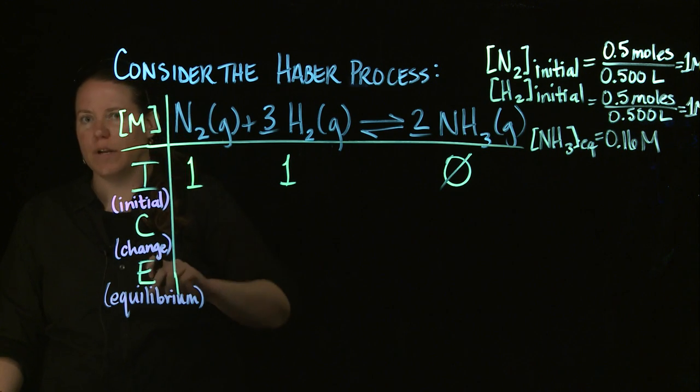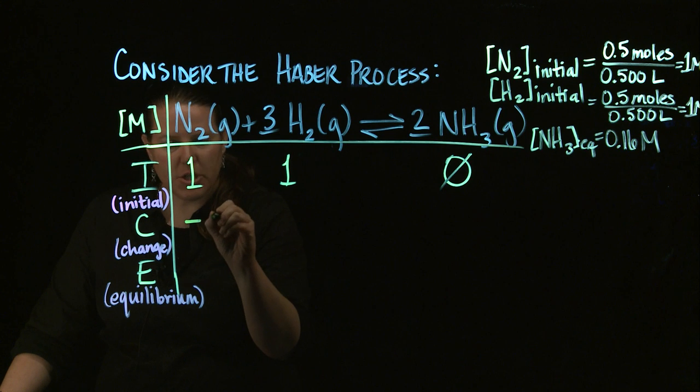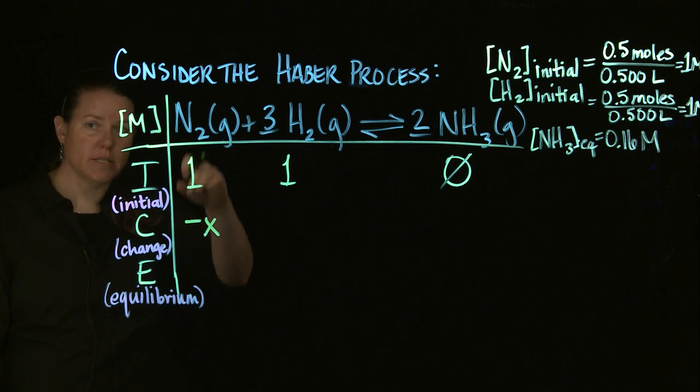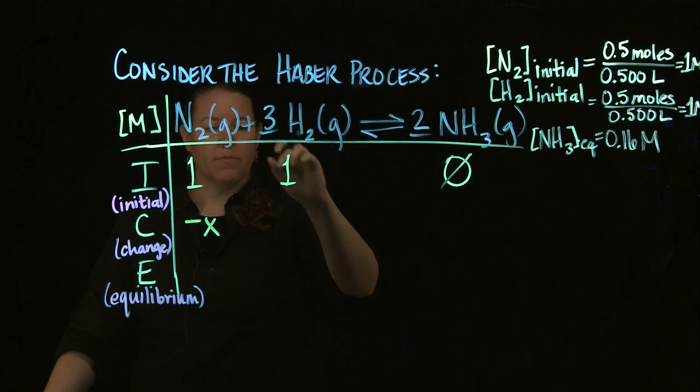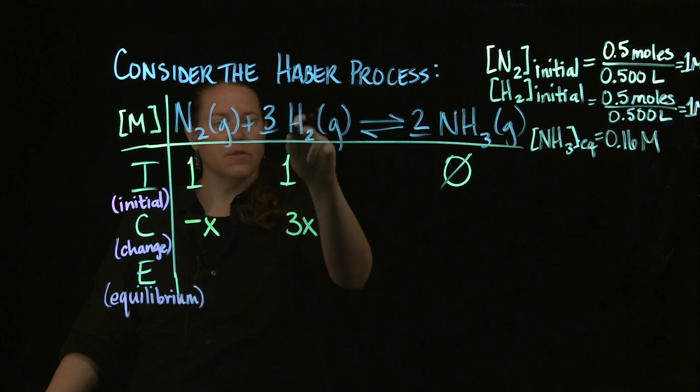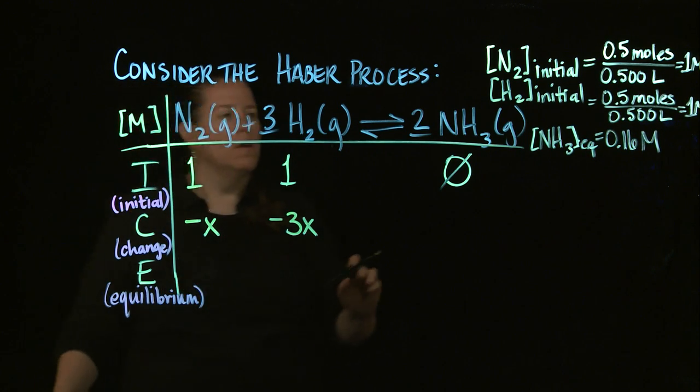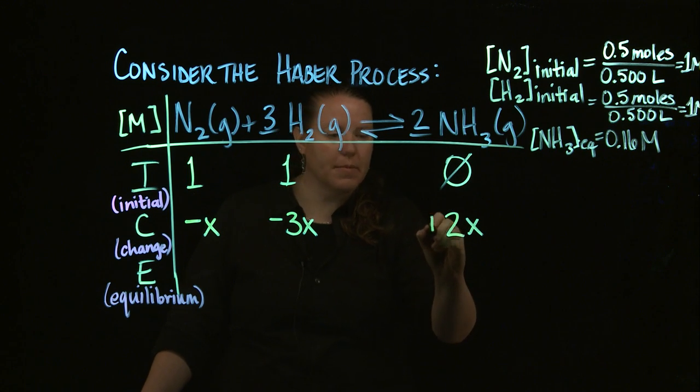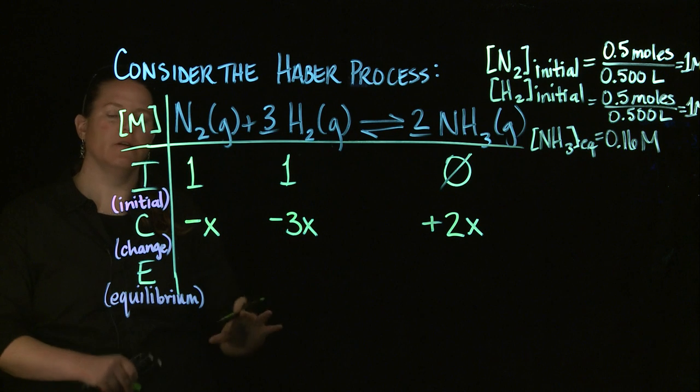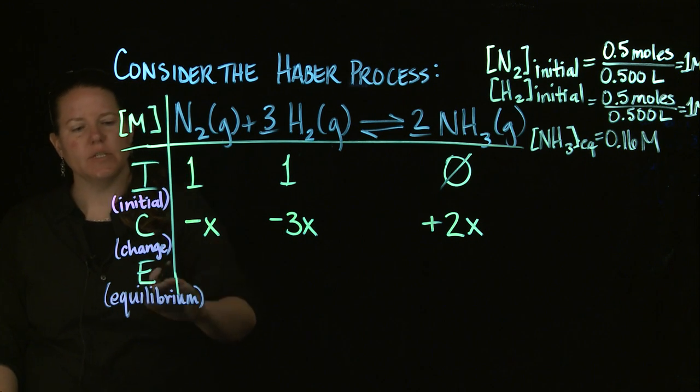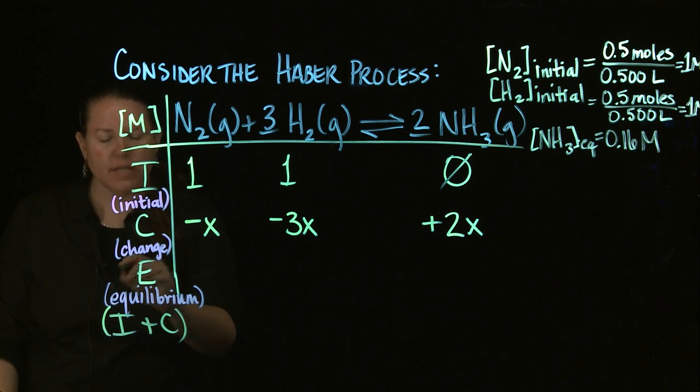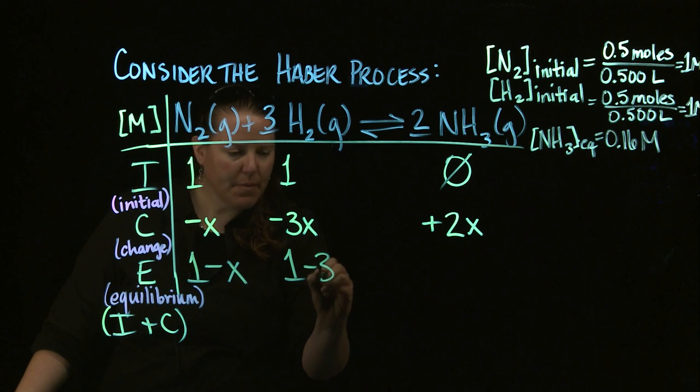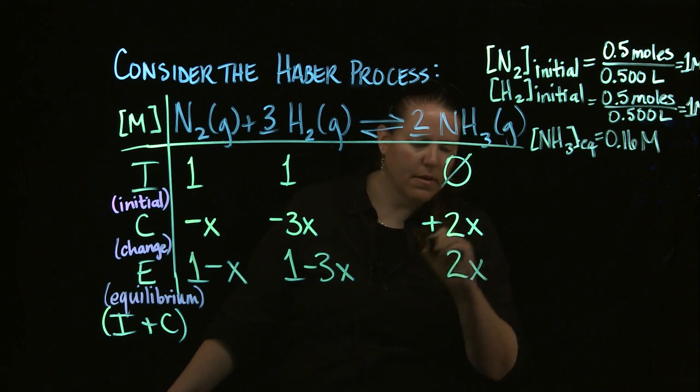So what do we got here? If it's N2, notice there's a 1 in front of that N2 in the balanced chemical reaction, so my change in x is going to be minus x. Minus because it's a reactant, 1x because that's the coefficient number of x's. For H2, there's a 3 in front of that, so I know it's going to be 3x here, and since it's a reactant as well, I'm going to put a minus in front of that. In terms of this one, this one has a 2 in front of it, so it's going to be 2x. And since it's a product, I'm going to add a plus in front of that because I expect the products to increase, the reactants to decrease. For equilibrium, I'm just going to add—this is really the addition of i plus c—that's what this last line is. So 1 minus x, 1 minus 3x, and then 2x.